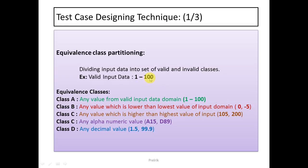For Class C you can pick 101, 102, 200, 300, 500 — you define only one test case for that class and it gives the same result. You can also define classes where data is alphanumeric or in decimals. This is how you define test cases in Equivalence Class Partitioning.